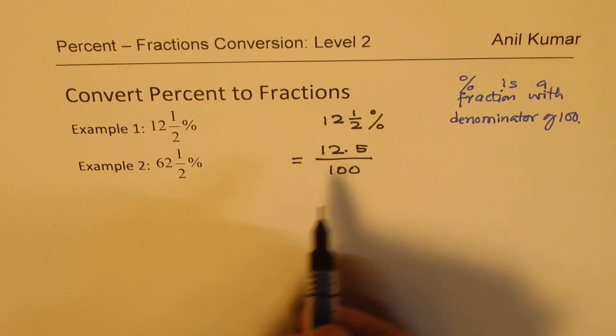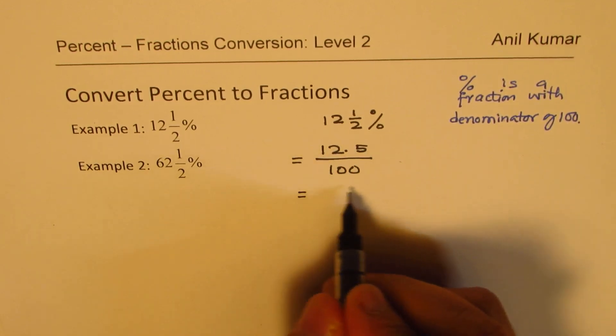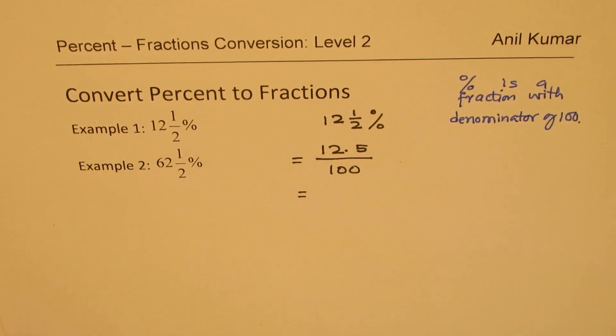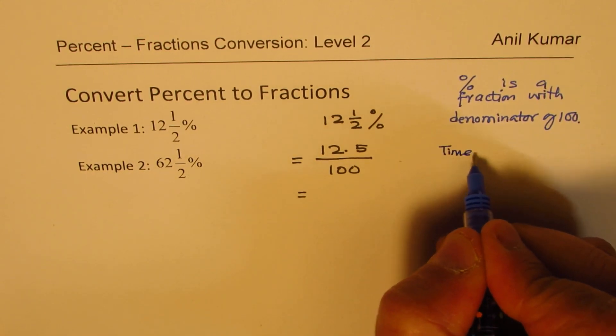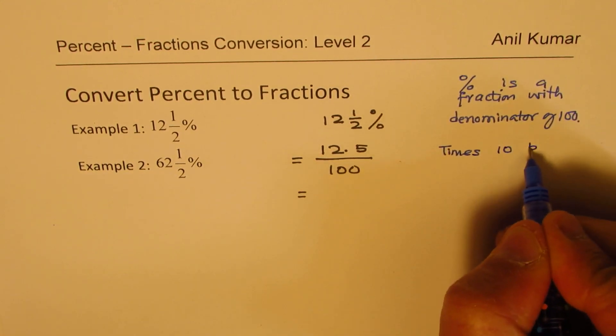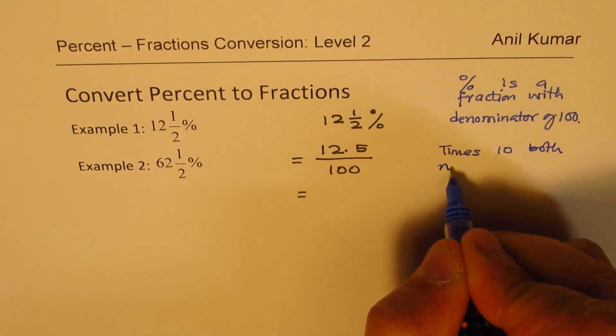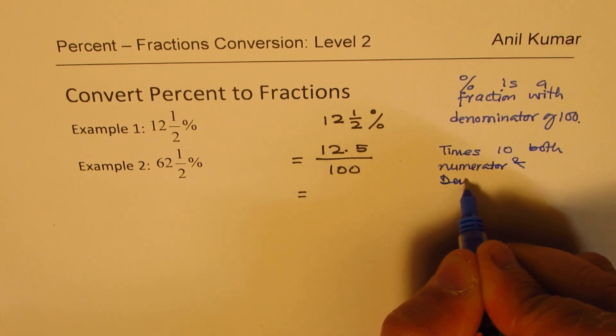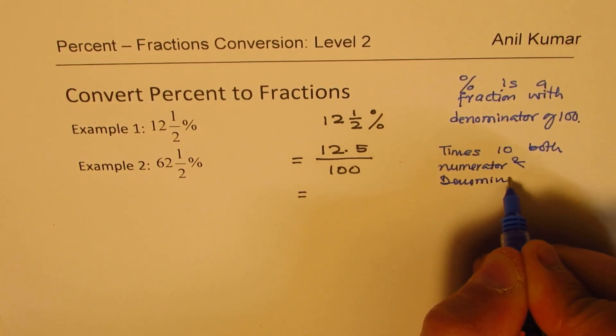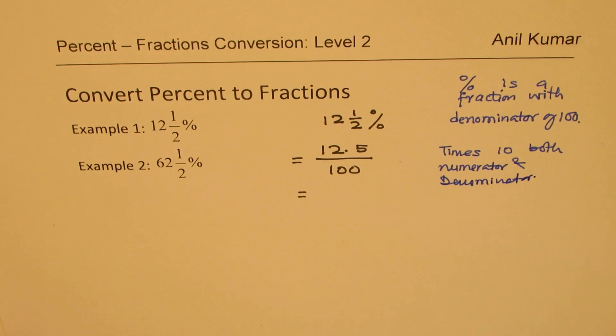Now, we should avoid writing decimals mixed with these numbers. So what we will do here is we will times 10, both numerator and denominator. Now these are the steps which you need to follow.